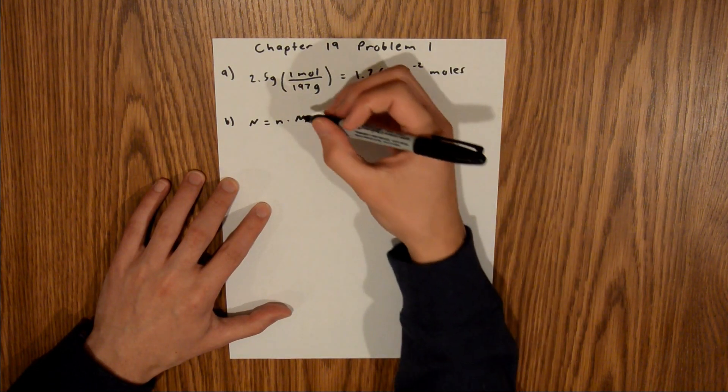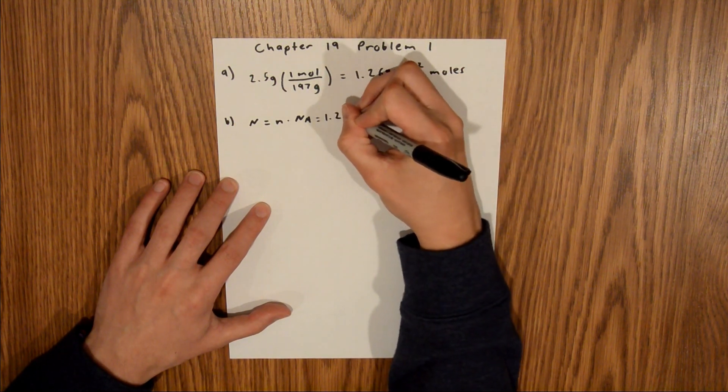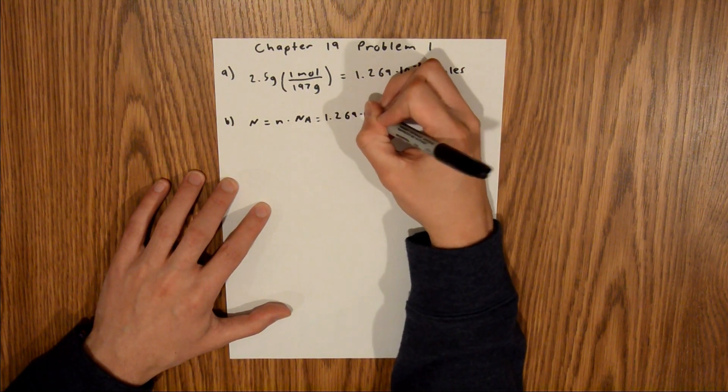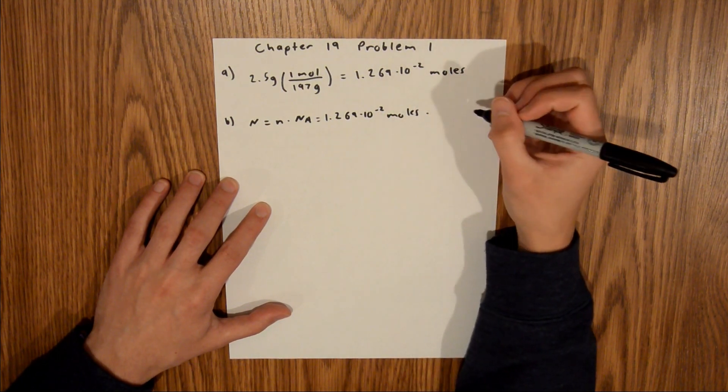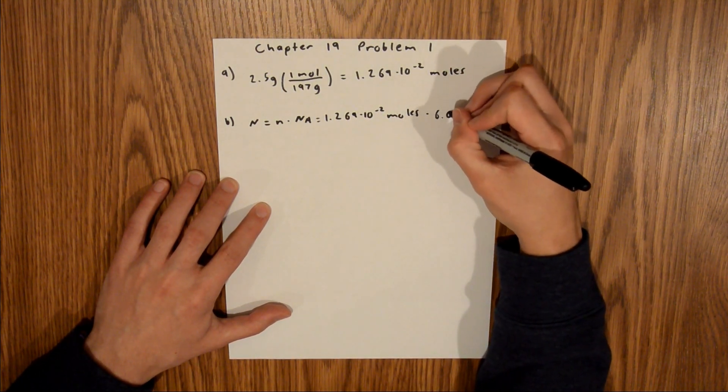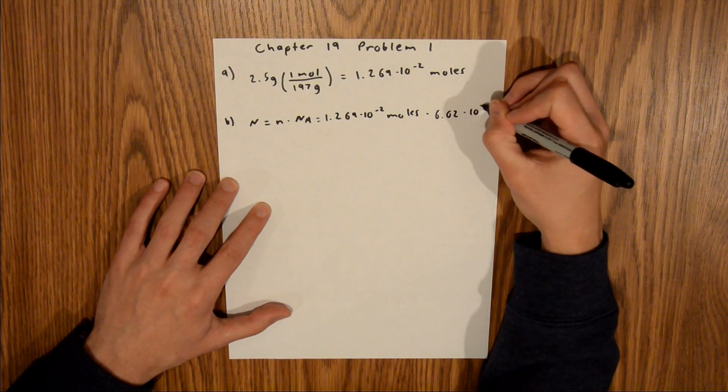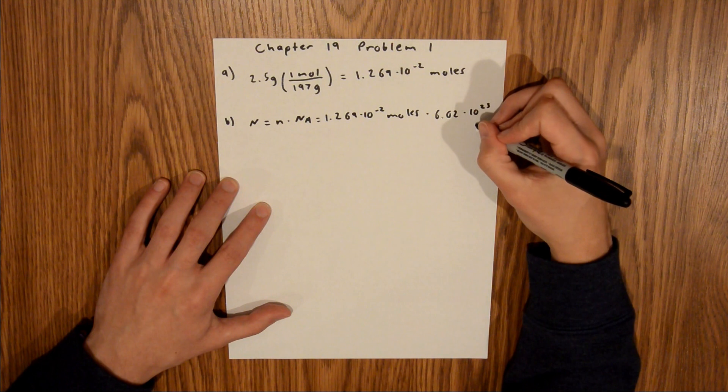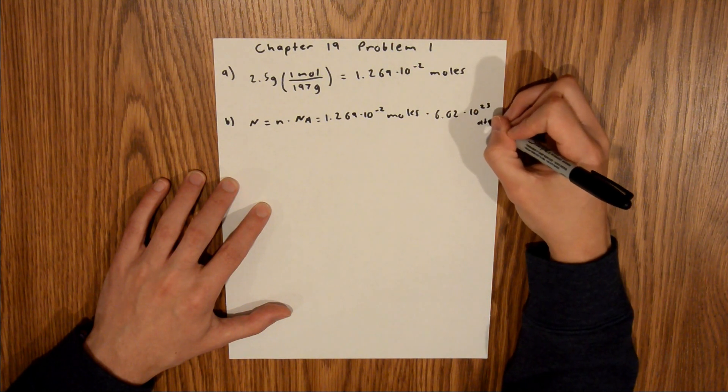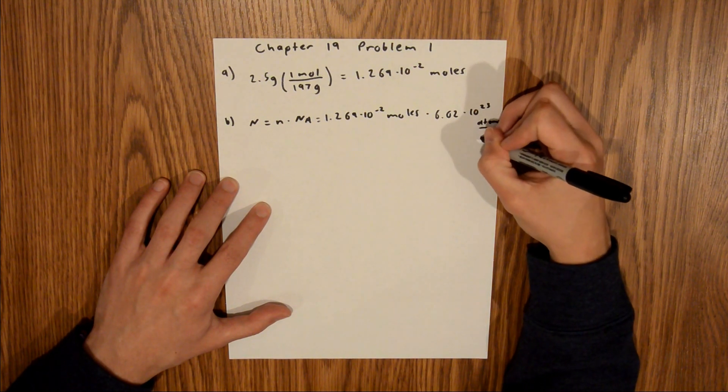And so, we can just plug those in. This is equal to 1.269 times 10 to the negative 2 moles times Avogadro's number, which is 6.02 times 10 to the 23rd. And the units on that is going to be atoms per mole.